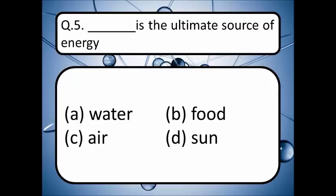Dash is the ultimate source of energy. The options are water, food, air, and sun. Pick your correct answer and write it down in the comment box. The correct answer is option D — sun is the ultimate source of energy.